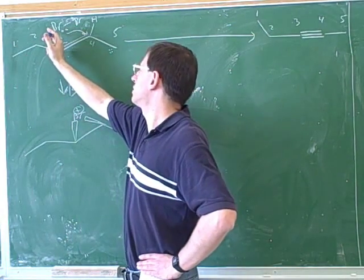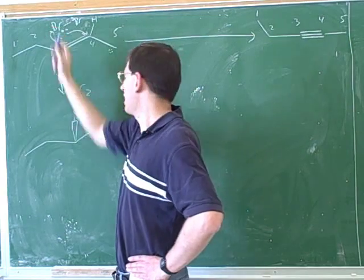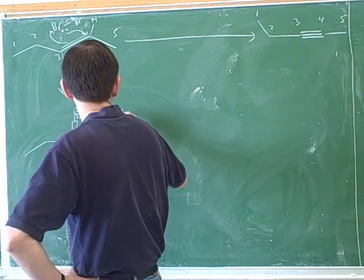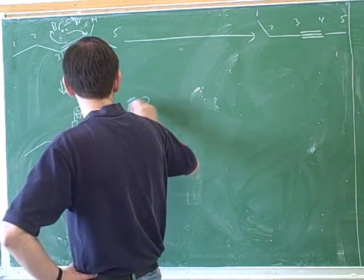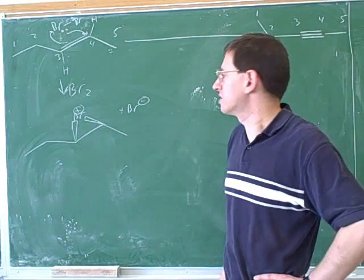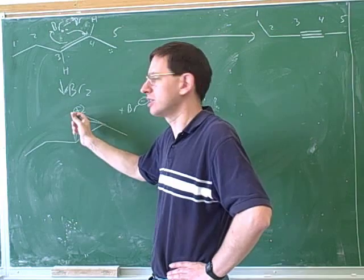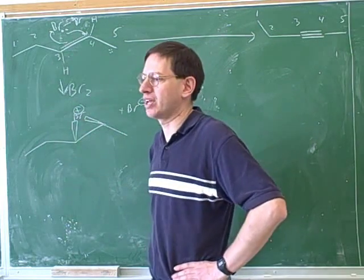Well, this bromine is losing two pairs of electrons and only gaining one. So it has to end up with a positive charge. So that will give us this intermediate. So it looks like this is one that you definitely want to practice, the mechanism for this halogenation. This first step is pretty complicated.